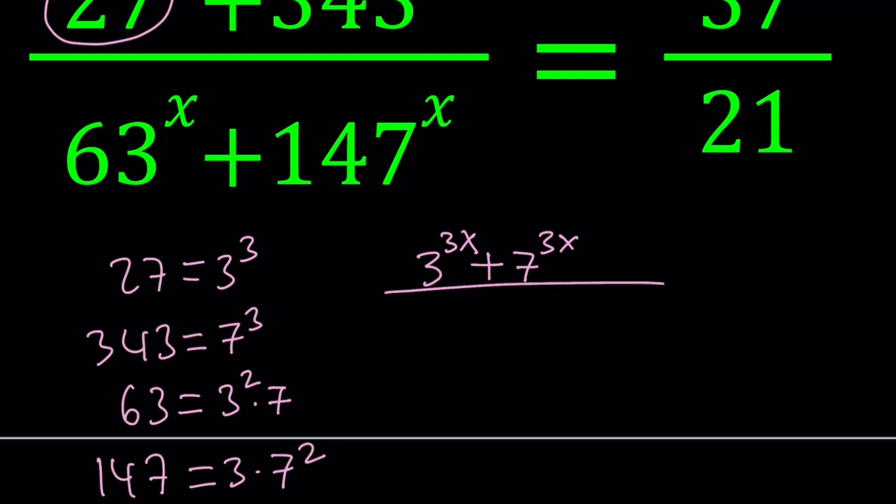At the bottom, I'm going to replace 63 with 3^2 times 7, giving me 3^(2x) times 7^x. And 147^x is going to give me 3^x times 7^(2x). And this is equal to 37/21.